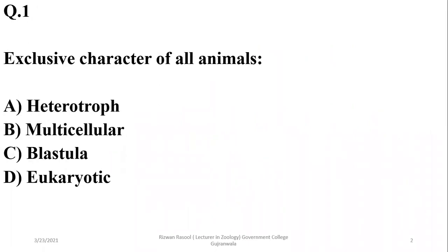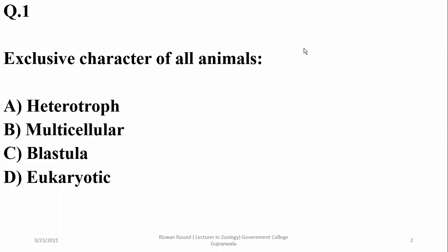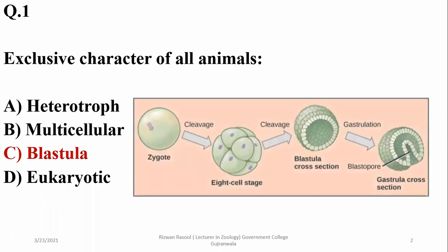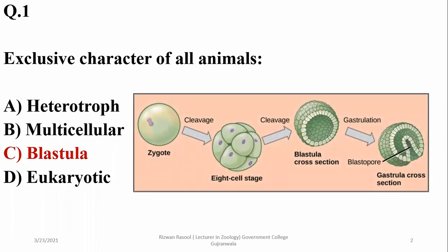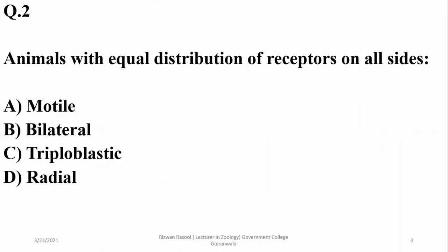Question one: the exclusive character of all animals. Animals are heterotroph, multicellular as well as eukaryotic, but blastula formation or having a blastula stage is the characteristic which distinguishes them from all other groups. Heterotrophs can be found in fungi as well as protozoa, and other groups are multicellular and eukaryotic, but blastula is the characteristic feature of animals only.